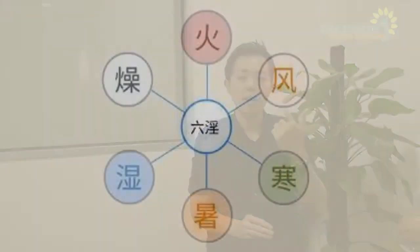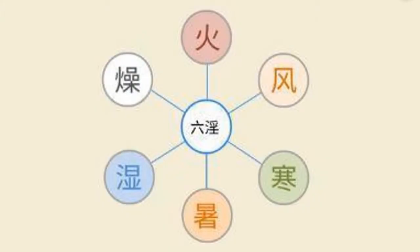Now having known the differences between a virus and bacteria, let us take a look at how TCM views a viral or bacterial infection. In the world of TCM, there are six pathogenic factors that can invade and affect the human body and cause diseases. These are: 风 (Wind), 寒 (Cold), 暑 (Summer Heat), 湿 (Dampness), 燥 (Dryness), and 火 (Fire).